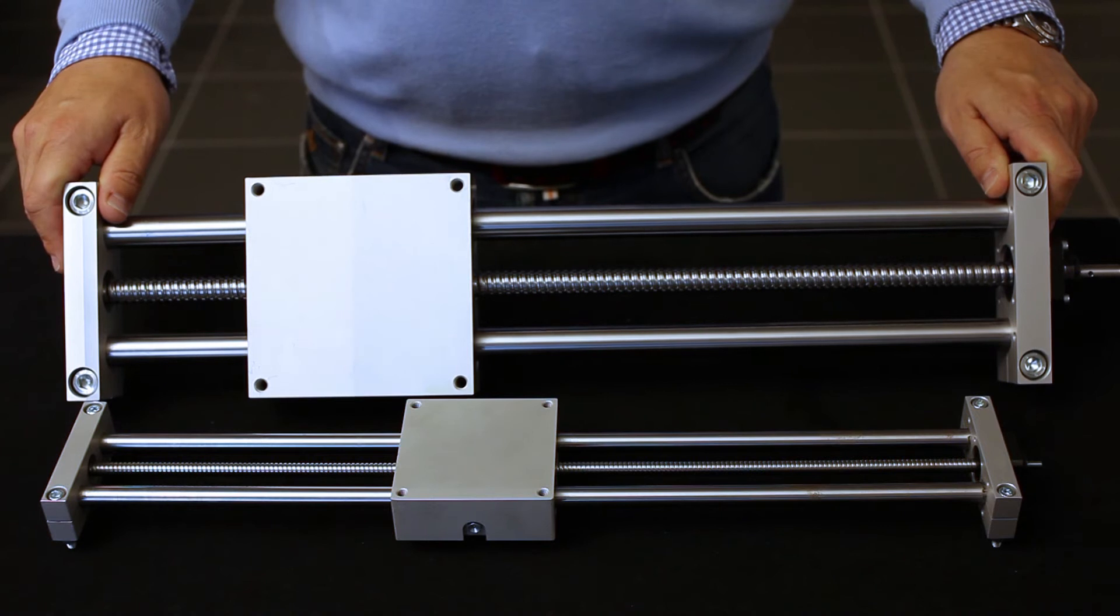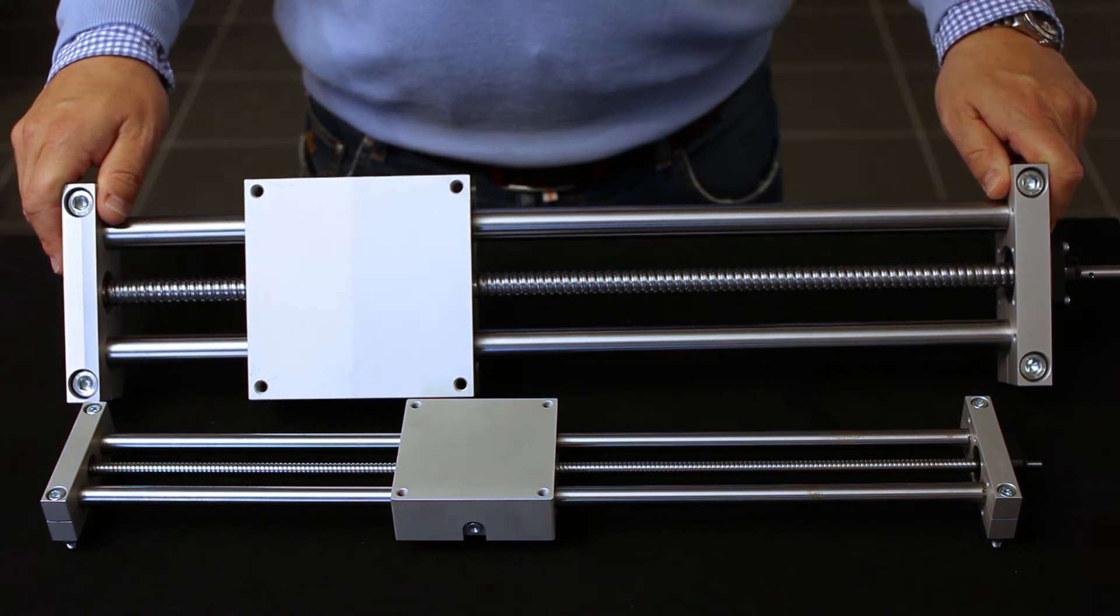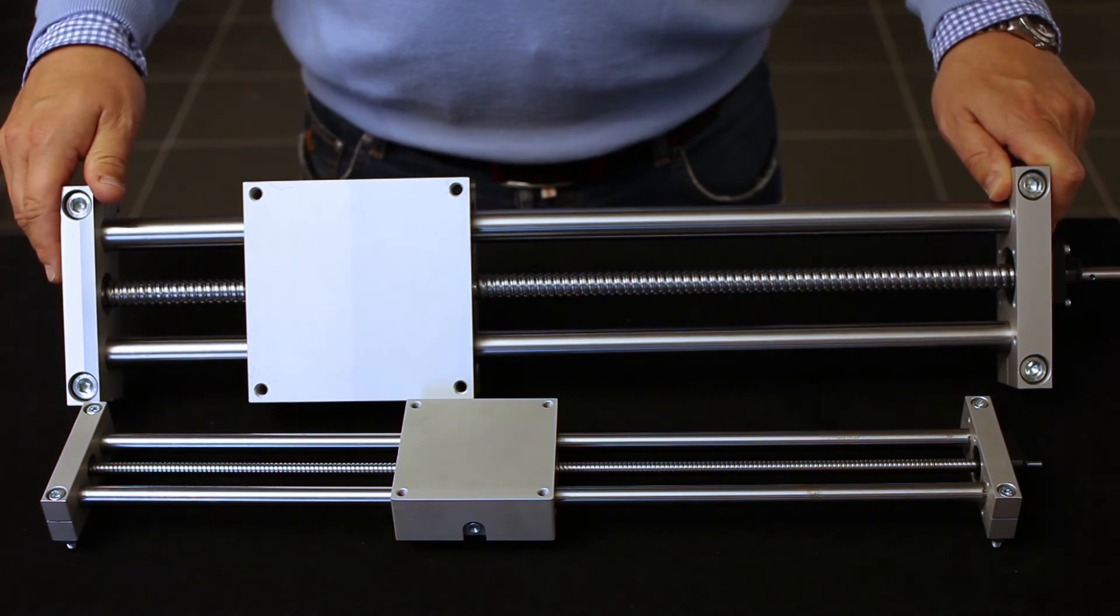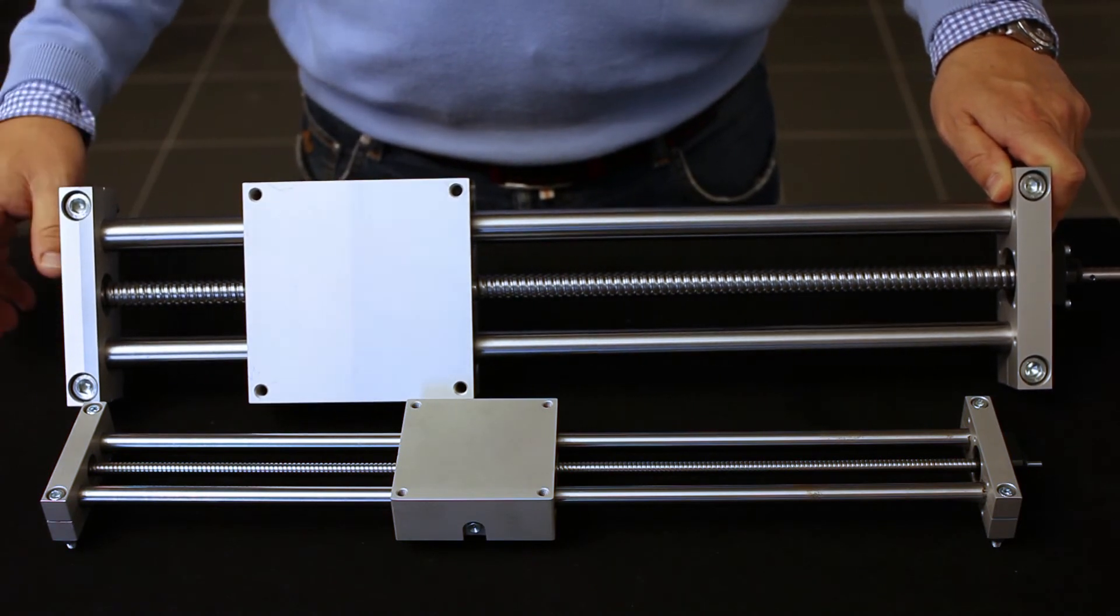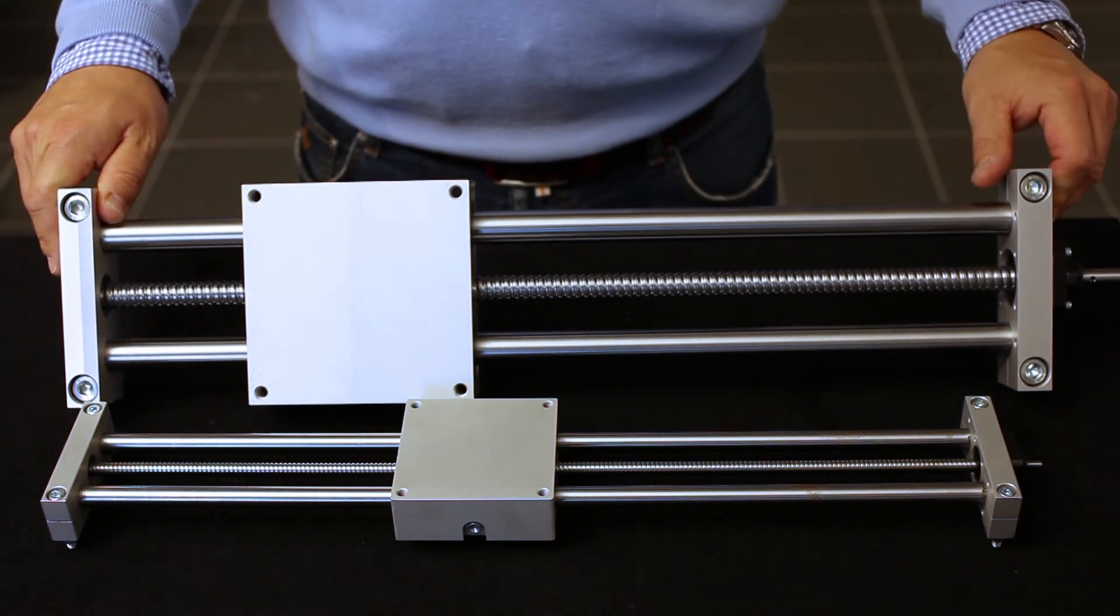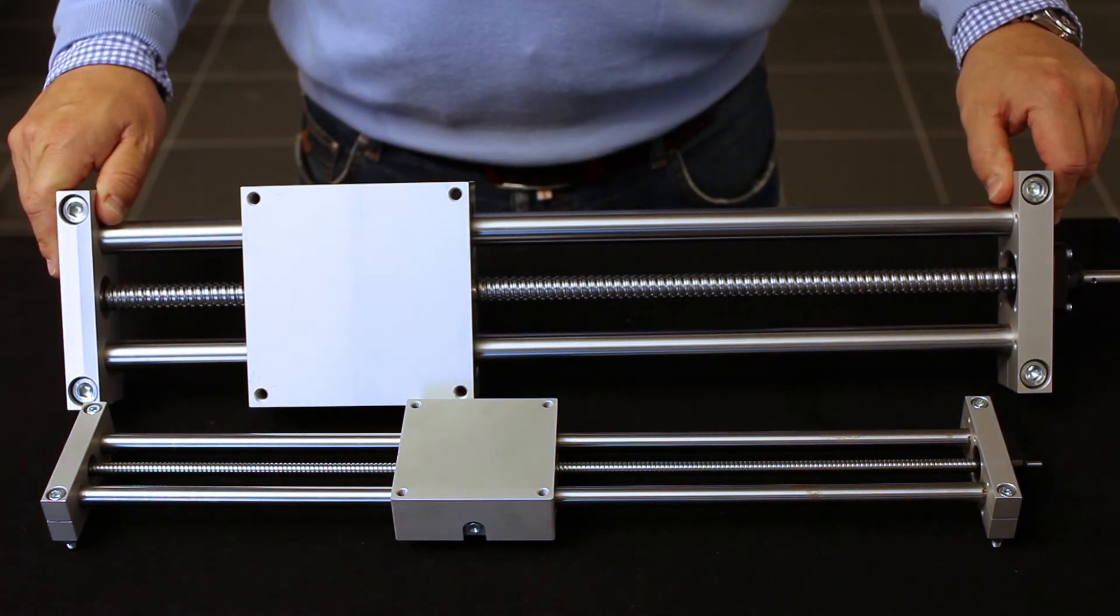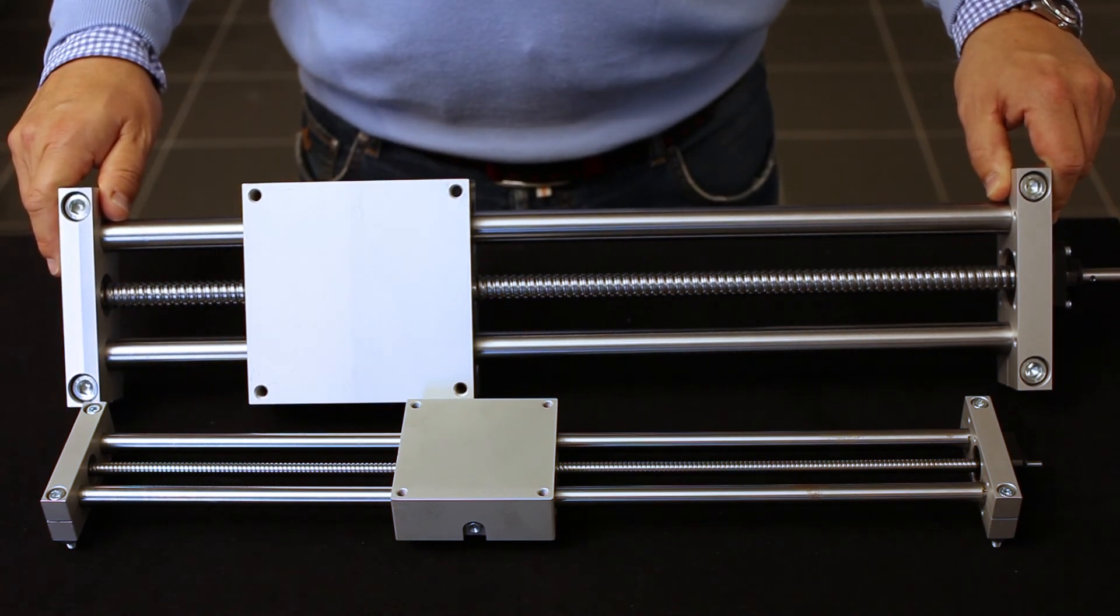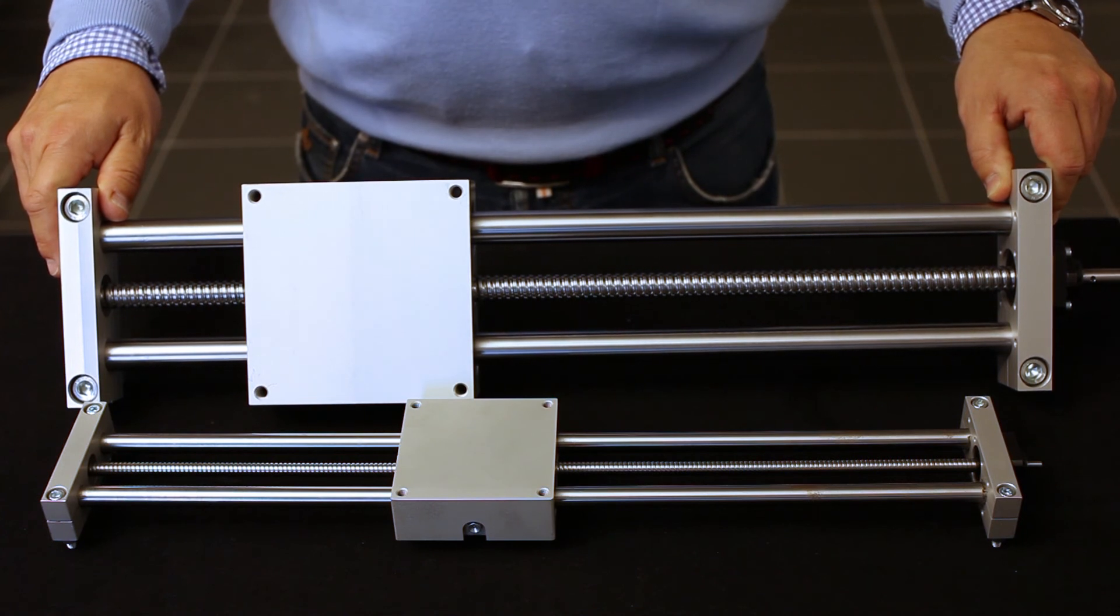If needed, we can also mount a protective bellow and a hand wheel in order to move it manually. Otherwise, we can also supply a special motor flange in order to fit a motor and gearbox. It's also possible to make this unit with a left and right hand ball screw in order to make a clamping device.